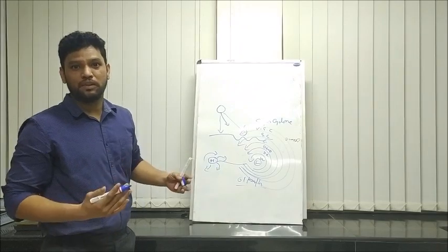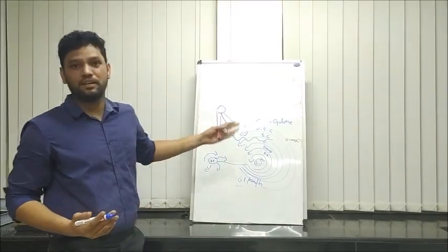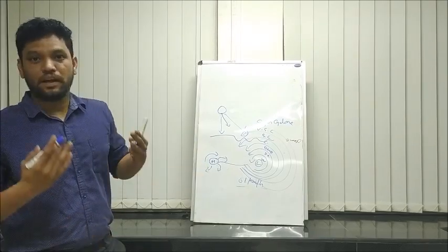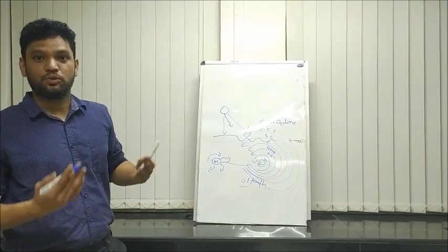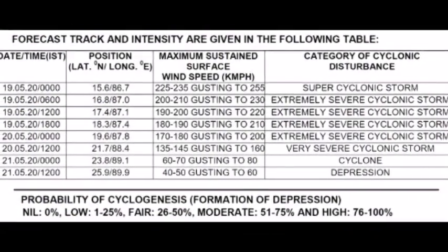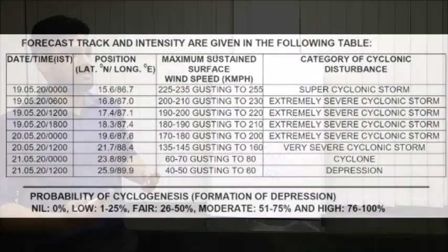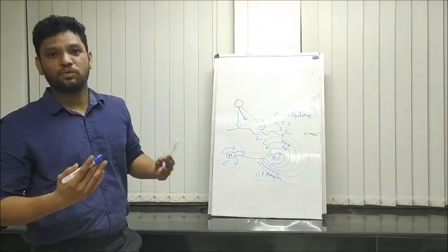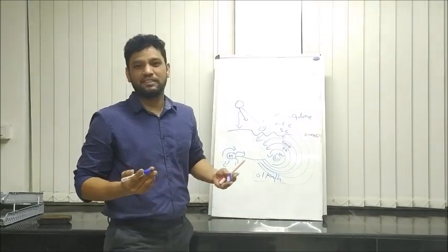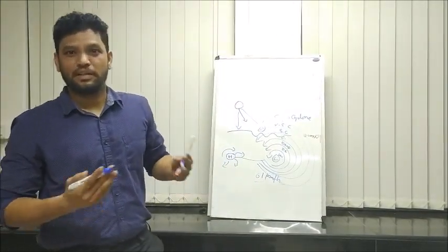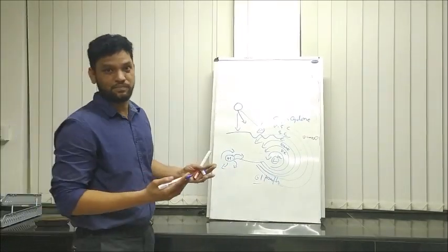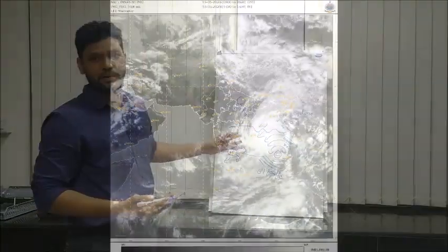Now we are currently talking about Ampan cyclone. The Indian Meteorological Department announced that it is a super cyclone. According to prediction, the wind speed is 225 to 235 km per hour. Hudhud only reached 215 km per hour. I guess this is one of the strongest cyclones compared with wind speeds in Bay of Bengal in history. This is currently moving in Bay of Bengal.